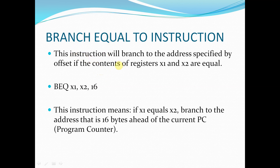This instruction will branch to the address specified in the offset if the contents of registers x1 and x2 are equal. If they are equal, it will branch to the address which is specified in the offset. The instruction format is BEQ x1, x2, 16. If x1 and x2 are equal, the PC will point to the offset address 16, that is 16 bytes ahead of the current PC program counter.